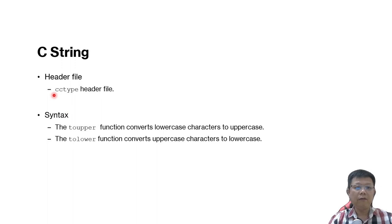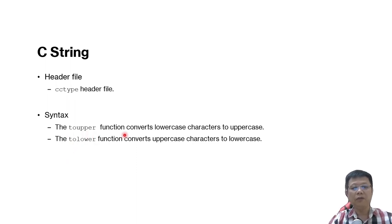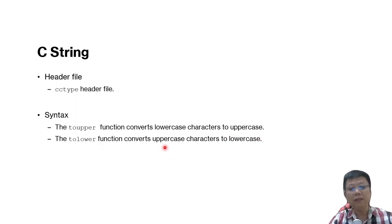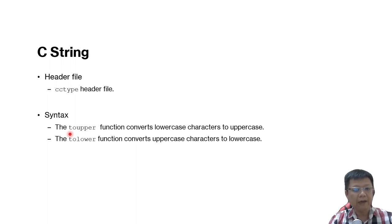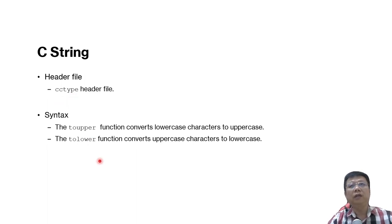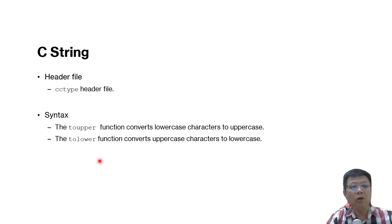Next we will look at the library header file for cctype. The header file for C types has a few functions. The first one is toUpper and toLower. The toUpper function is used to convert lowercase characters to uppercase, and toLower converts uppercase characters to lowercase. When using these functions we are referring to the C type libraries, which relates to C string concepts, and we convert one character at a time.